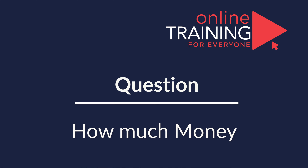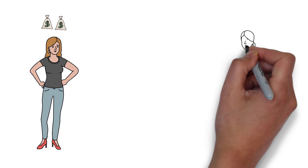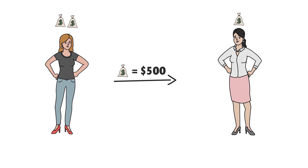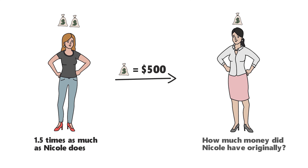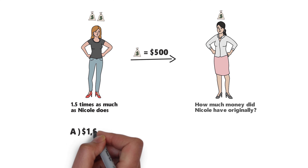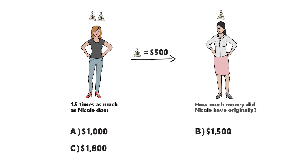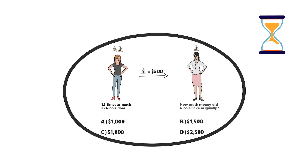Here's an interesting question which tests your understanding of money management and accounting. Sarah has twice as much money as Nicole. After Sarah loans $500 to Nicole, she will have 1.5 times as much as Nicole. How much money did Nicole have originally? Choices: A is $1,000, B is $1,500, C is $1,800, D is $2,500.